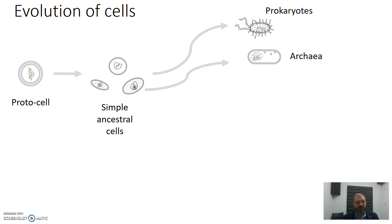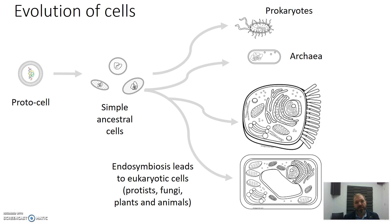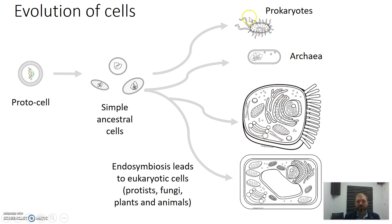Alongside that, we also have the evolution of a different cell type called archaea, which is very similar to prokaryotes but an ancient type of single-celled organism that's quite similar to eukaryotic cells yet still doesn't have a nucleus. Then at some stage along the evolutionary process, we have a process called endosymbiosis, which leads to the formation of eukaryotic cells. These form the other five kingdoms we use for classification — protists, fungi, plants and animals. In the next slide we'll look at how combinations of prokaryotic cells coming together could create a more complex cell type: the eukaryotic cell.